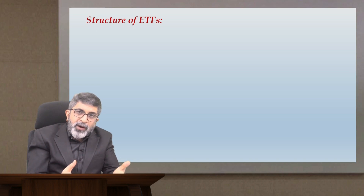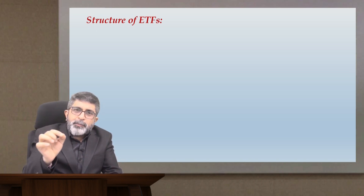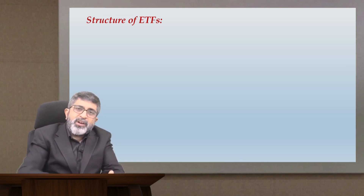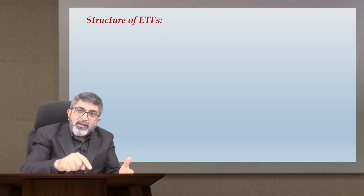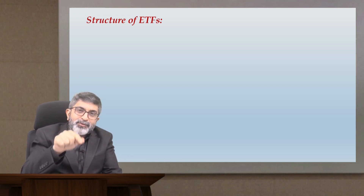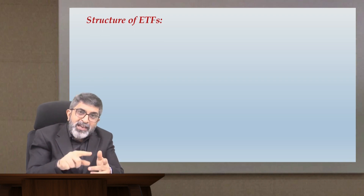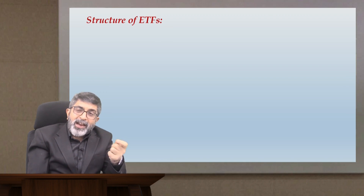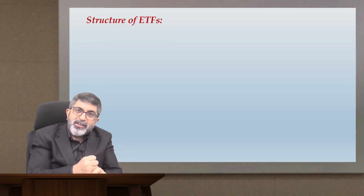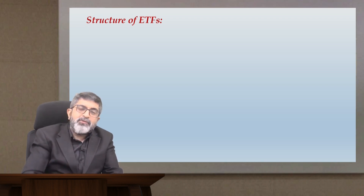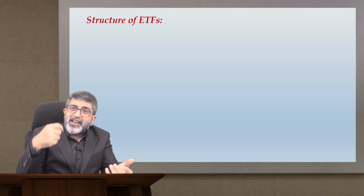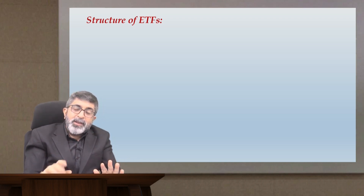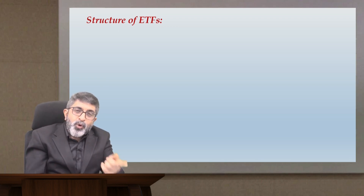In an open-ended fund, when you want to liquidate your investment, whatever the prevailing NAV, you sell all the units back to the mutual fund company — that flexibility exists. That is why the structure of ETF is like an open-ended fund, where additional units can be issued and existing units can be redeemed. The problem of liquidity will never arise; if someone wants to buy, a seller will always be available, and vice versa.